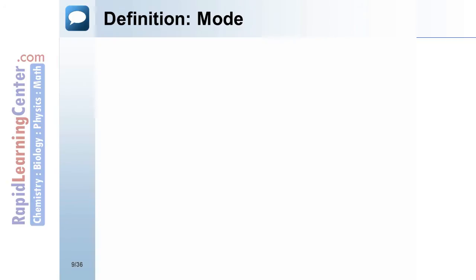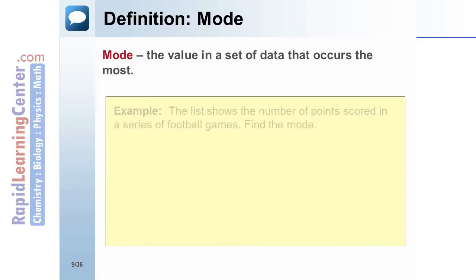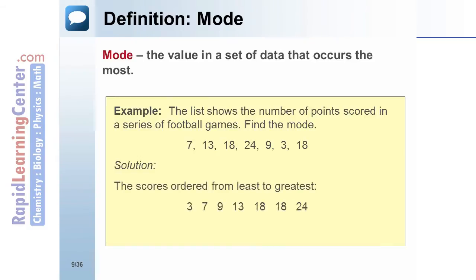Definition: Mode. The mode is the value in a set of data that occurs the most. Example: The list shows the number of points scored in a series of football games by one team: 7, 13, 18, 24, 9, 3, 18. Find the mode. Solution: The scores ordered from least to greatest are 3, 7, 9, 13, 18, 18, 24. The score that occurs most often is 18. The mode is 18.